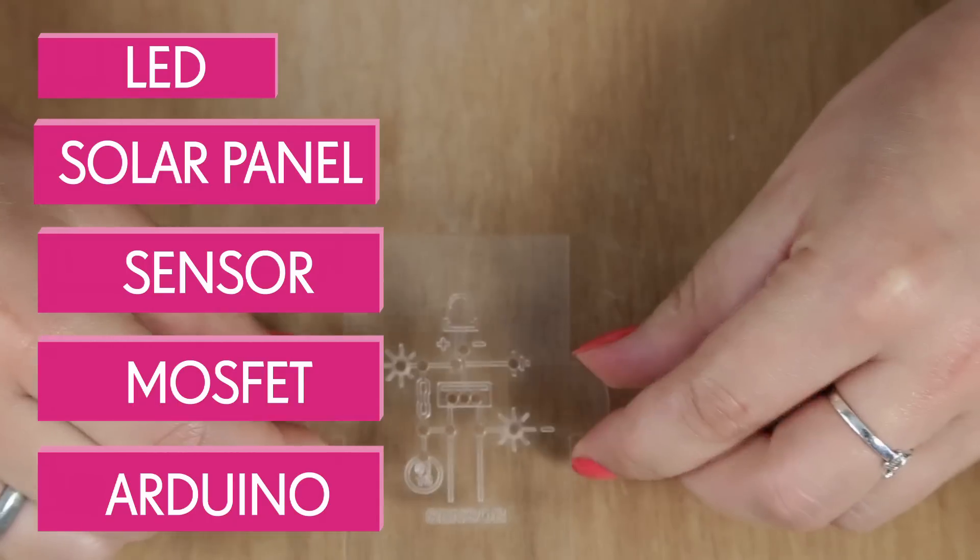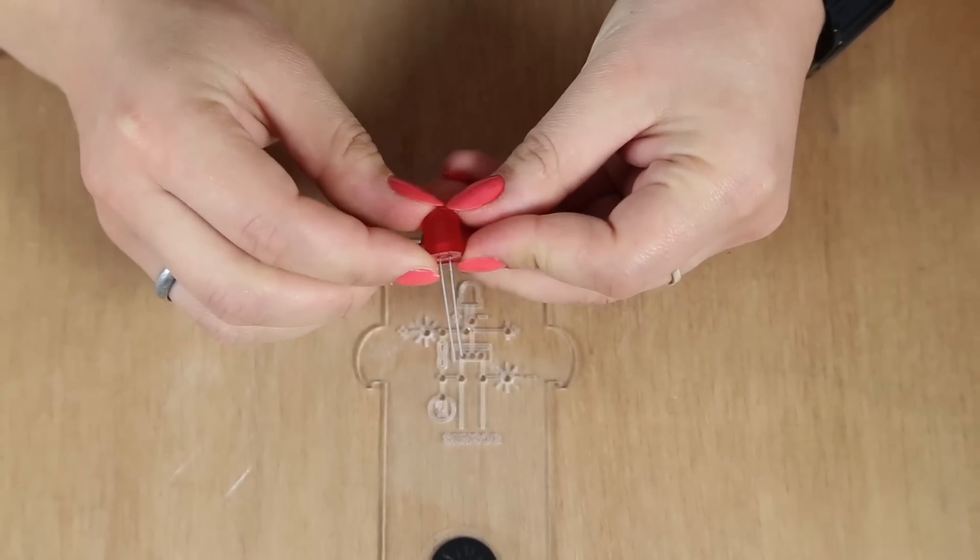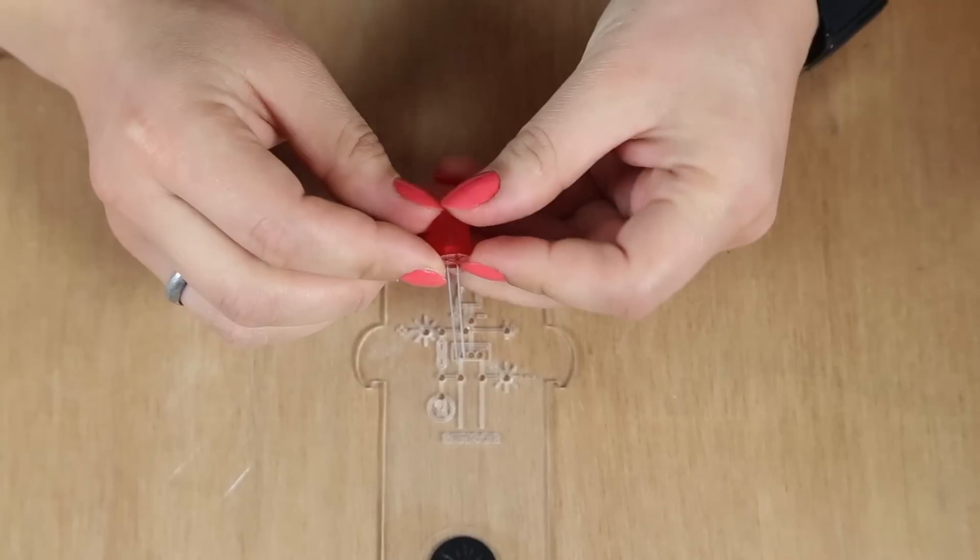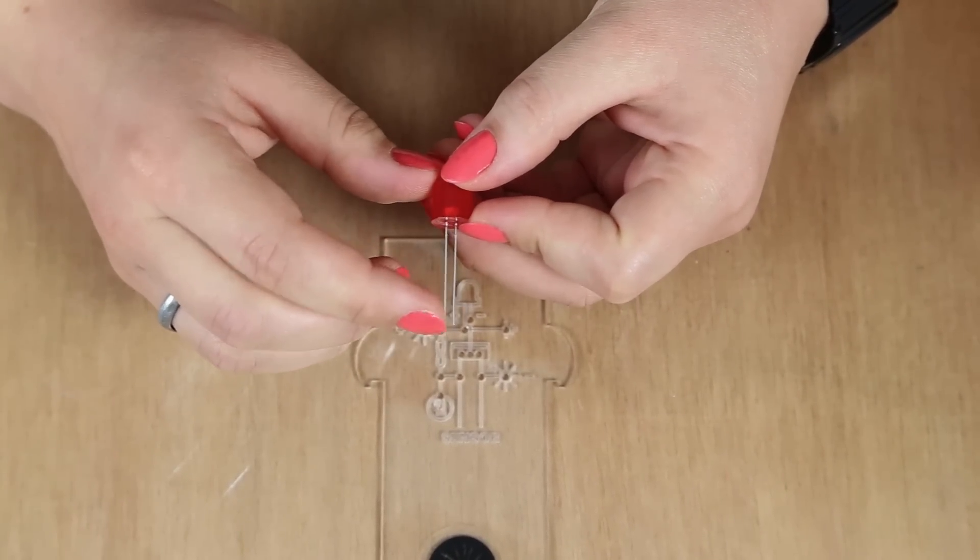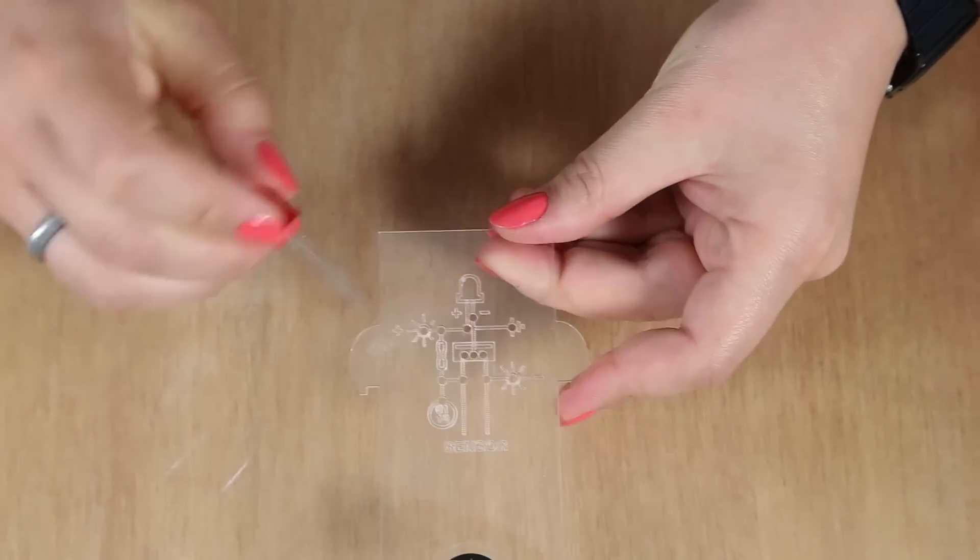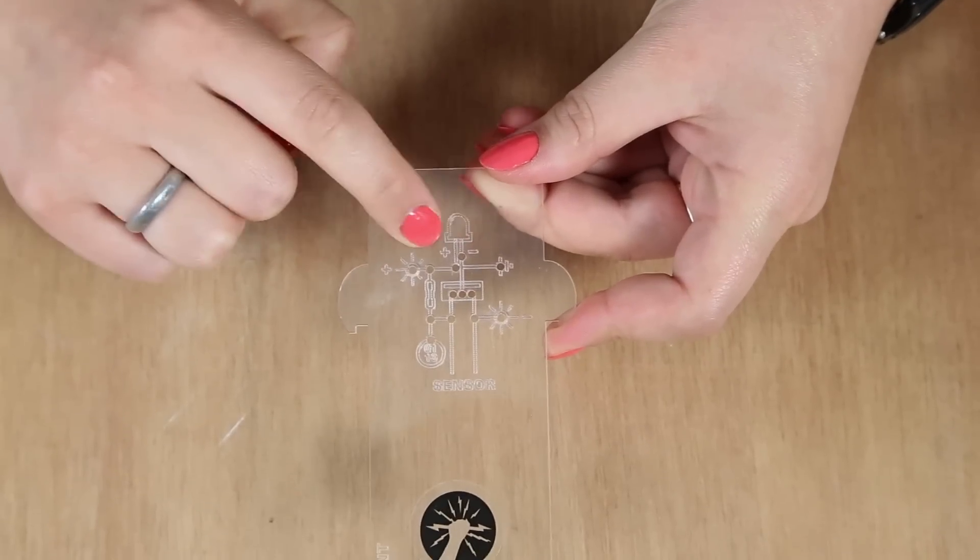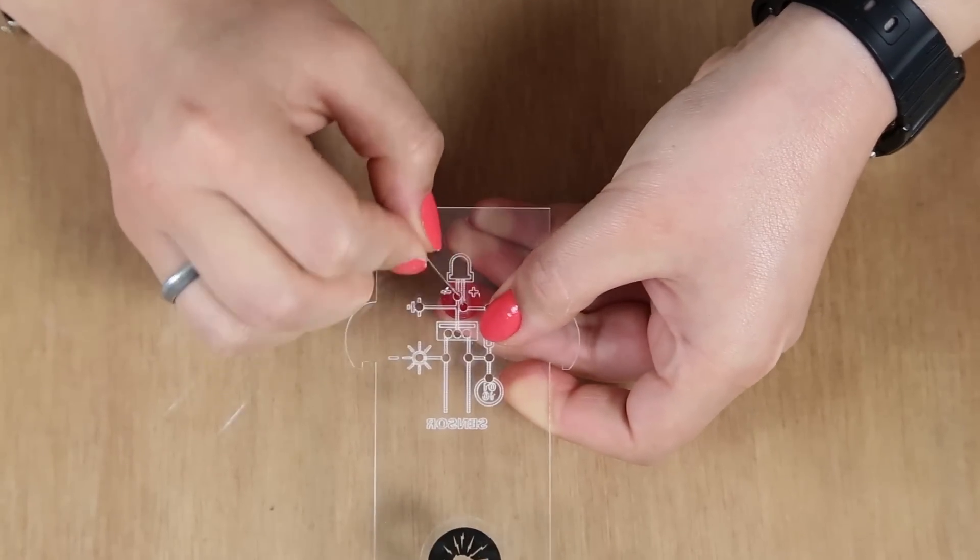So we're going to firstly start off with the LED. So the LED is a component that has something called polarity. So this means that it has a long and shorter leg. So the long leg is for positive and the short leg is for negative. We've made this easy for you by putting a positive and negative sign on the board. To help keep the component in place, just bend them 45 degrees.